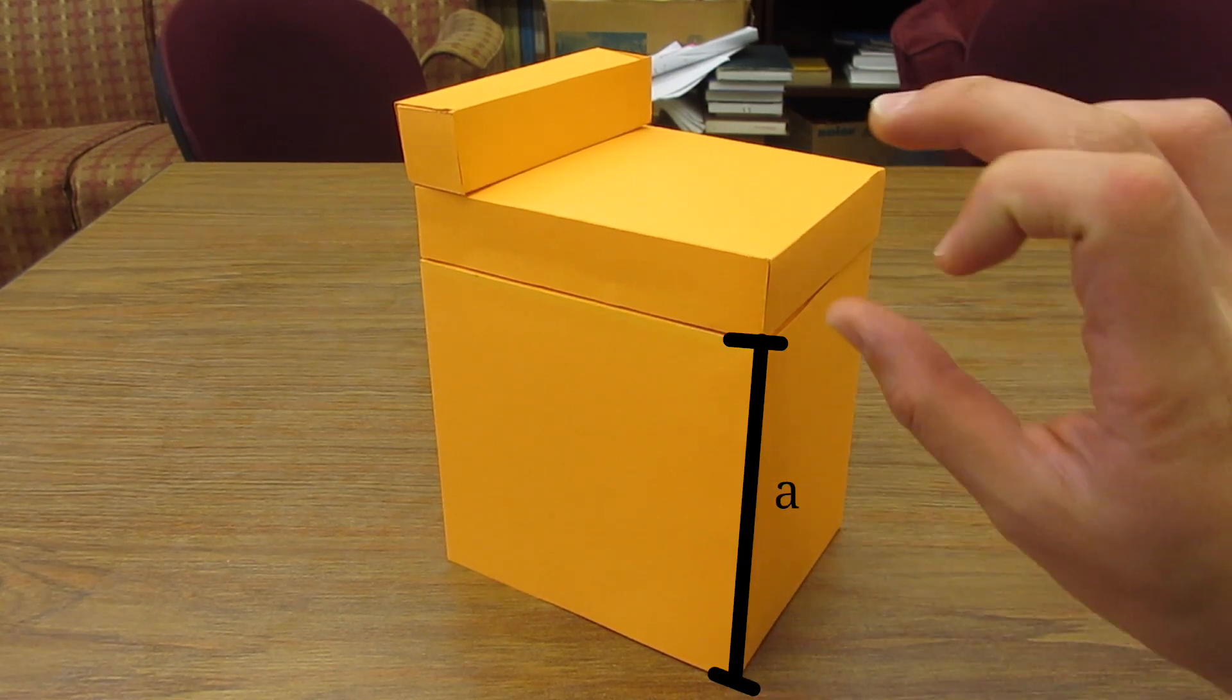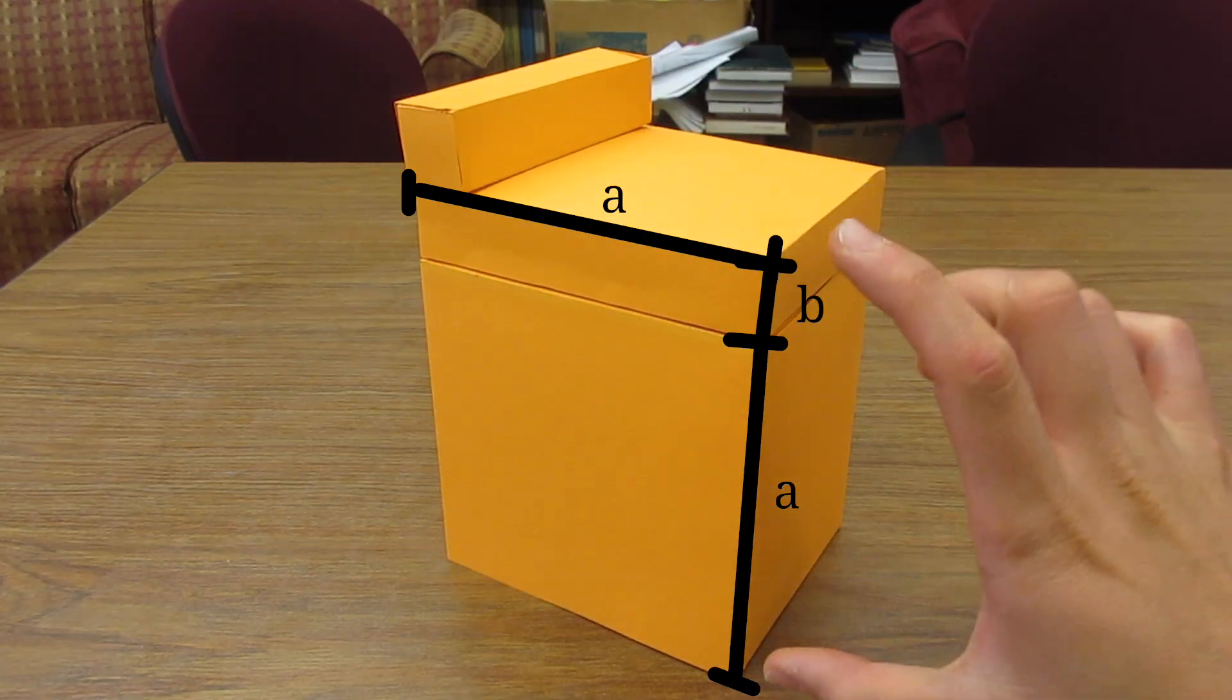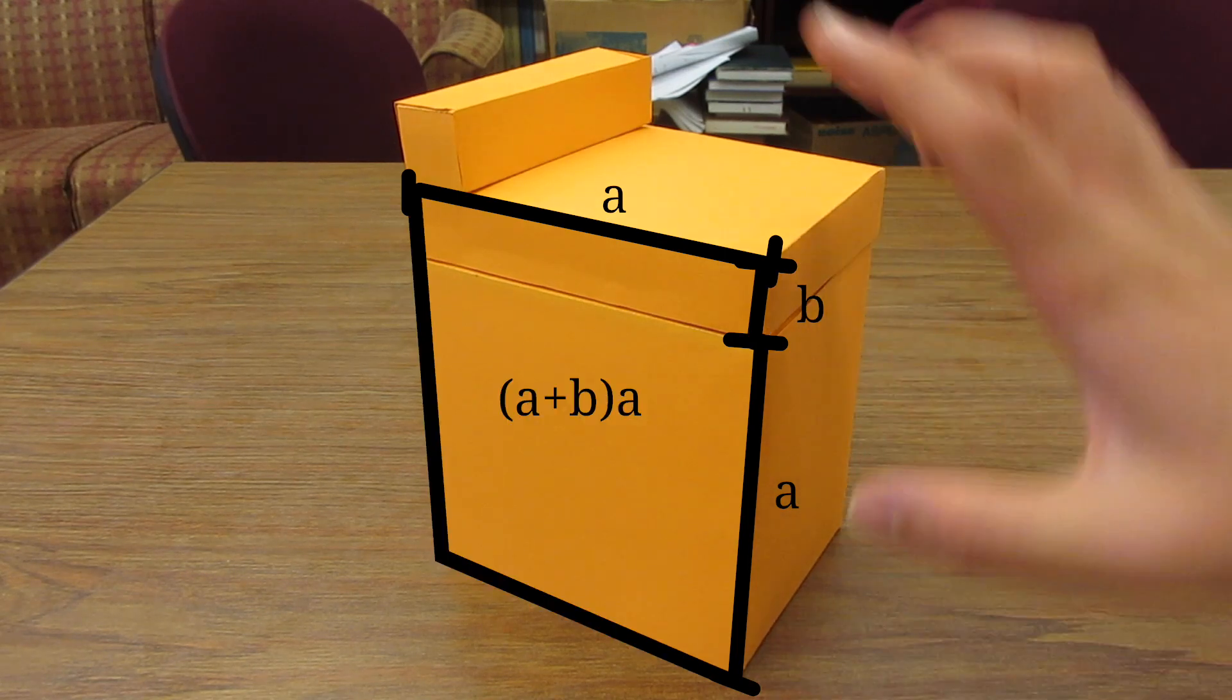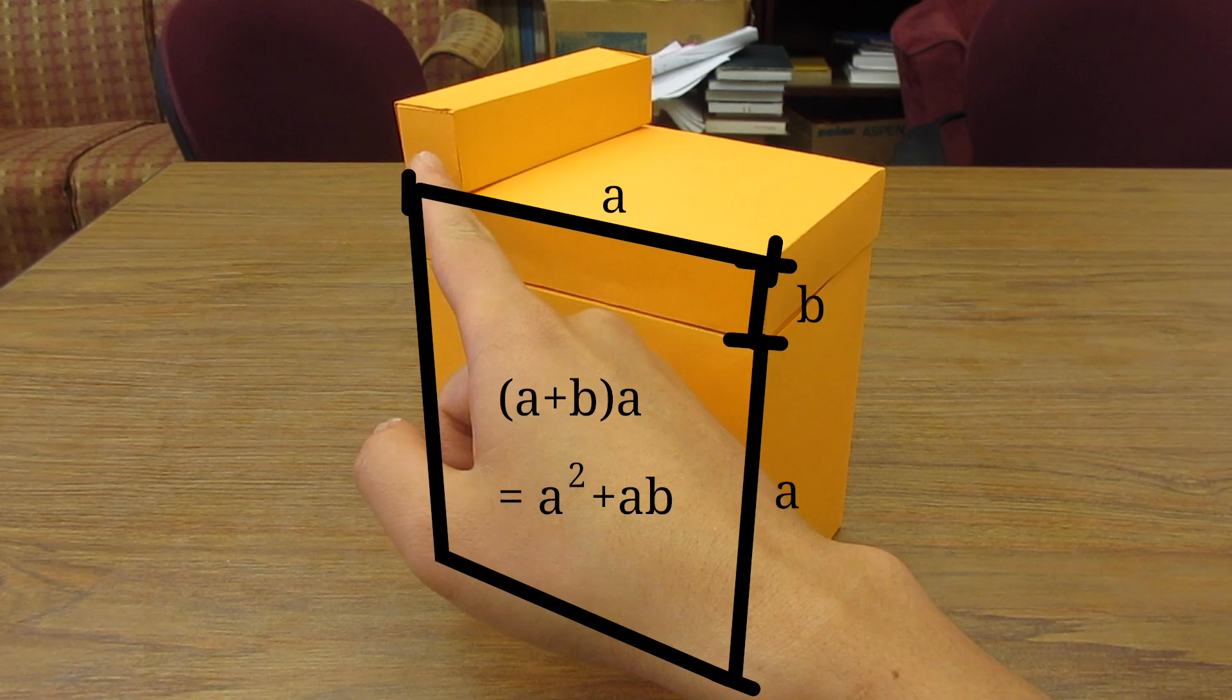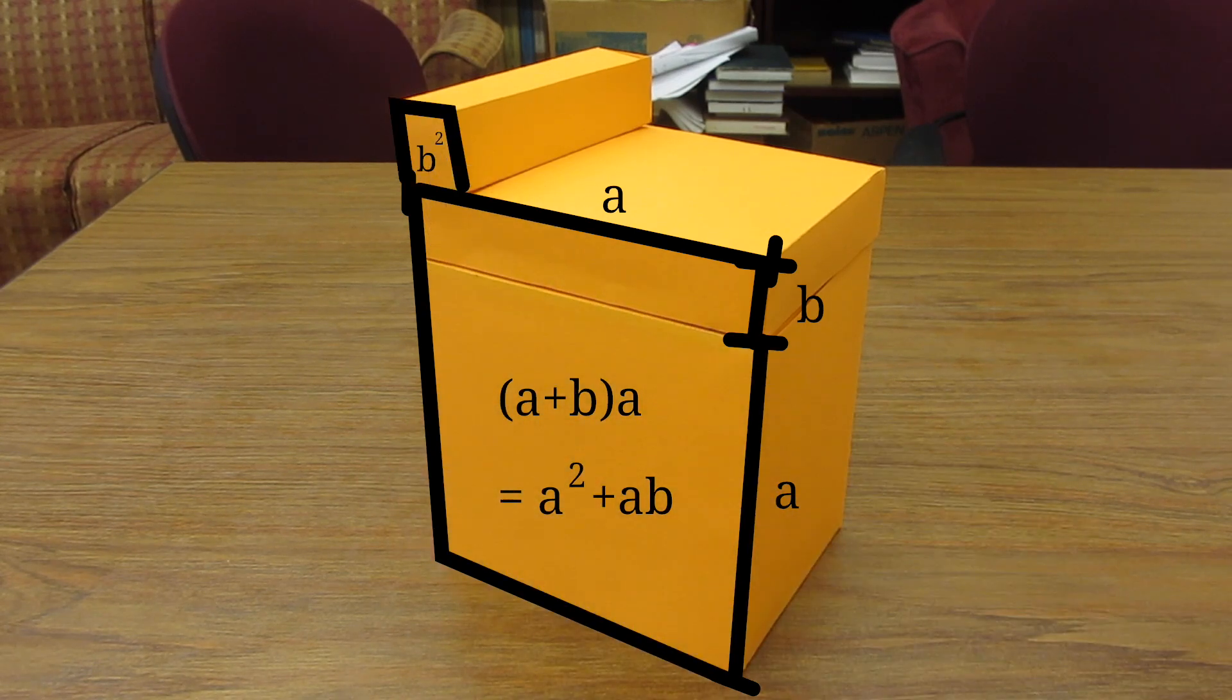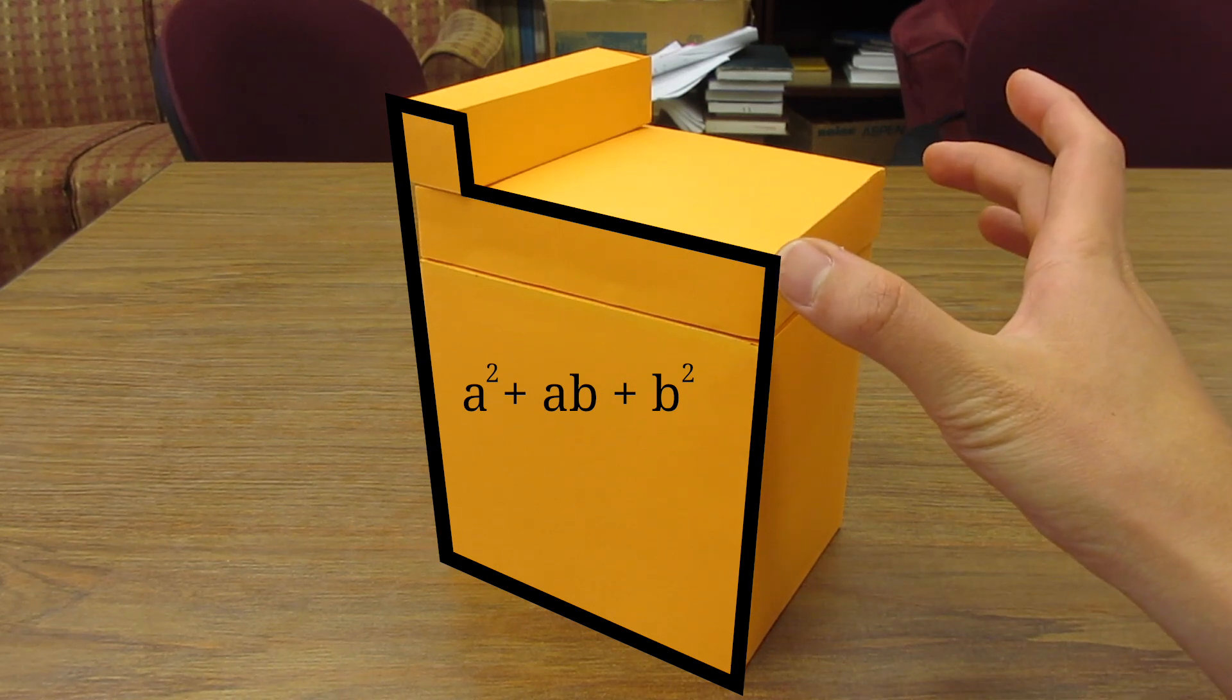This length is a, this length is b, this length is a. Area of this one is gonna be (a + b) times a, which is a² + ab. And area of this guy is gonna be b². So the total area of the base is gonna be a² + ab + b². The height is gonna be simply a - b.